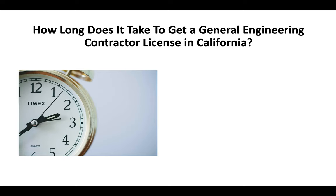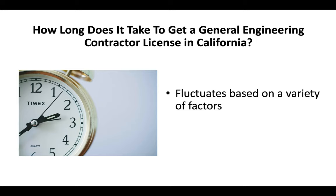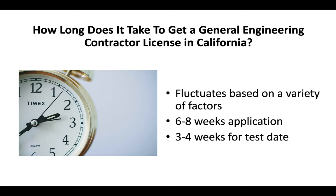How long does it take to get a general engineering contractor license in California? It typically fluctuates based on a variety of factors. Generally, you can expect a six to eight week application processing time and then another three to four weeks before you go and take your test. The application processing time in California fluctuates, so you'll definitely want to make sure you're aware of potentially how long this can take.